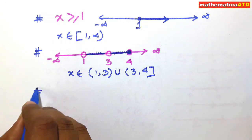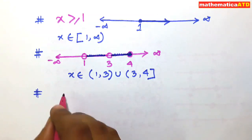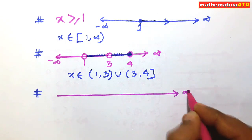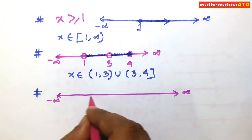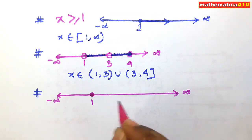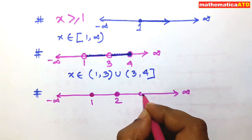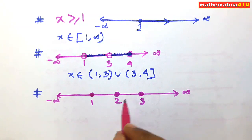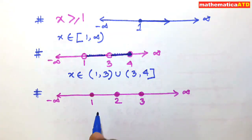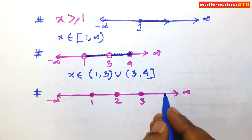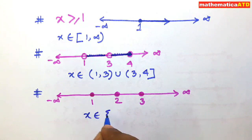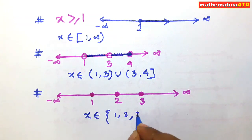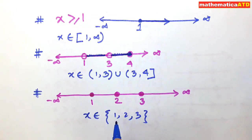Another example: on the real line I mark three points — 1, 2, and 3 — all darkened. No other points are taken. How do you represent this in notation? Since only these three specific points are taken on the real line, you write x belongs to the set {1, 2, 3}, which is a set containing only three elements: 1, 2, and 3.